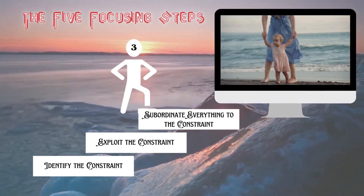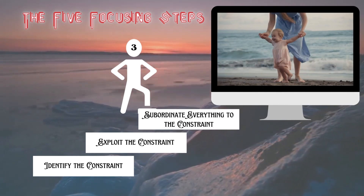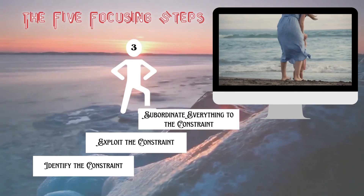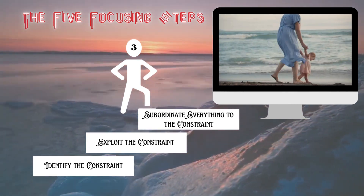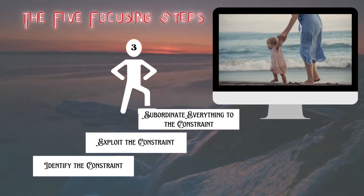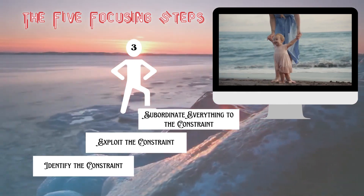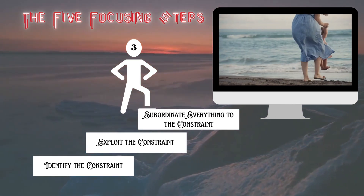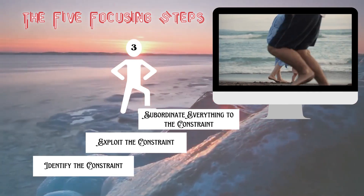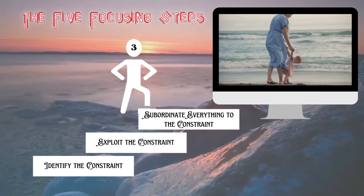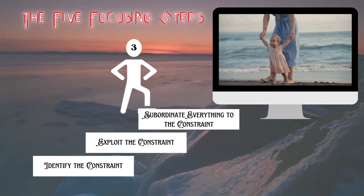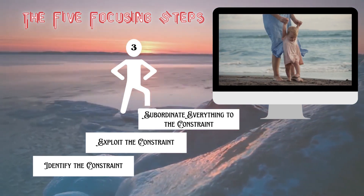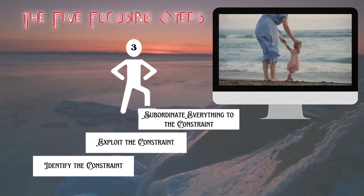The third step is to subordinate everything to the constraint. In the previous step, we concentrated on getting the maximum out of the constraint by leveraging it. Whereas in this step, we concentrate on how the non-constrained elements around the constraint can support it to do better. Let us assume a baby is the constraint and a mom is the non-constrained. The mom encourages and trains the baby to walk, and at the same time lifts and supports the baby wherever it cannot walk by itself. Likewise, we should look for all possible ways the constraint can be supported by subordinating the non-constrained elements to it.